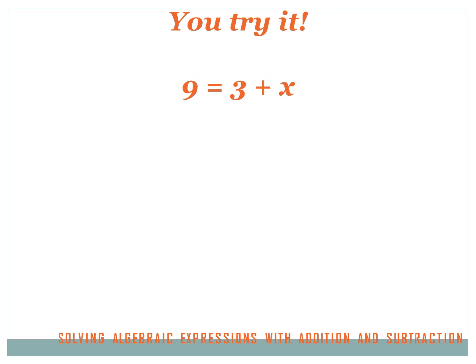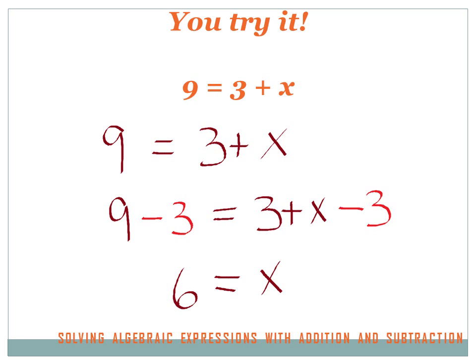Try this one: 9 equals 3 plus x. Hit your pause key, do the problem, then hit your forward key. I've got an extra positive 3 on the right side of the equation. To get rid of a positive 3 I subtract 3 from both sides. So I've got 9 minus 3 which equals 6, and 3 plus x minus 3 — the positive 3 and negative 3 cancel each other out — leaving just x. So x equals 6.